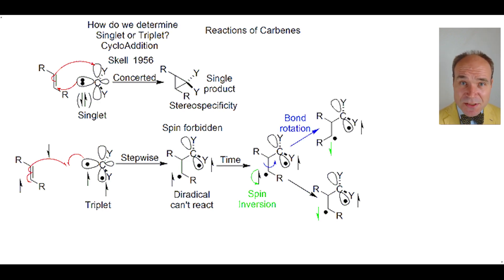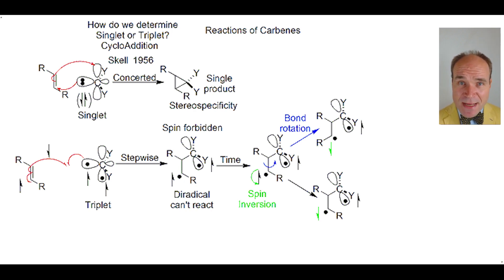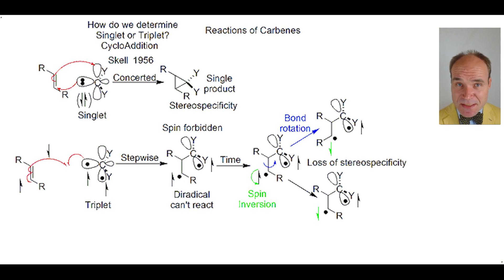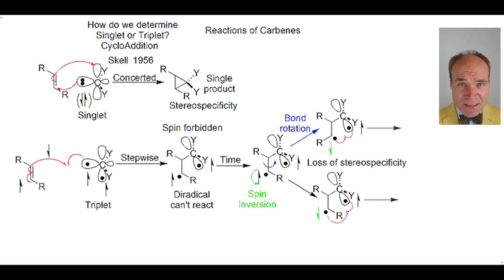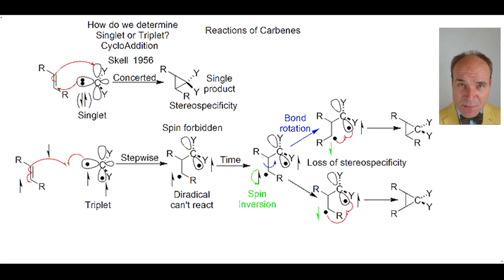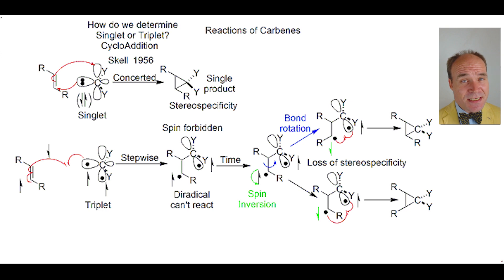Thus, when the two remaining radicals are now of opposite spins, the single bond may or may not have rotated to give two different conformations — we have lost the stereospecificity. The spin-allowed radicals in each conformation can react to create the final single bond, forming two separate cyclopropanes that are stereoisomers of each other — two molecules that have the same atoms connected in exactly the same way, but have a different spatial orientation.